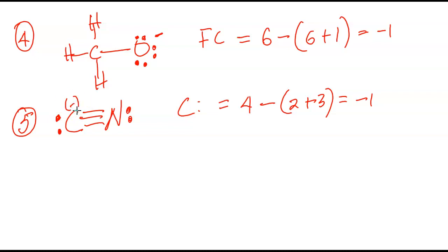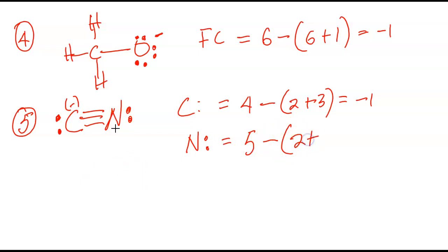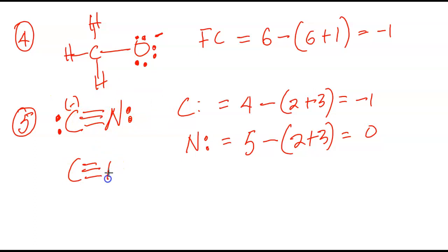So the charge here is negative one. And then what about nitrogen? Nitrogen here is in group five — five minus. It also has two dots and three bonds like carbon. Five minus five will give you zero, there's no charge. So the overall charge on the cyanide ion is actually resident on carbon, and when we draw it, this is the way it looks — that is the way you draw the Lewis structure of the cyanide ion.